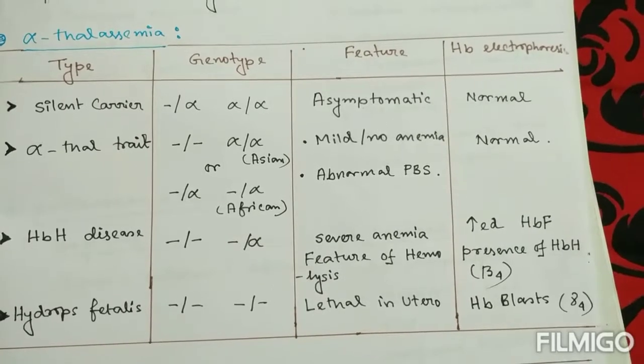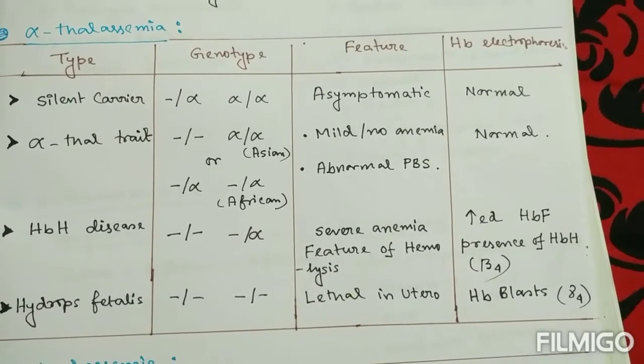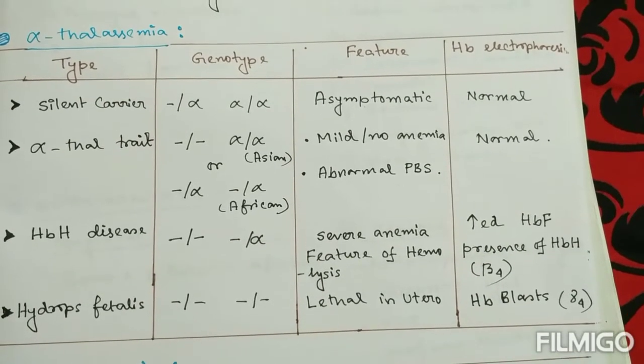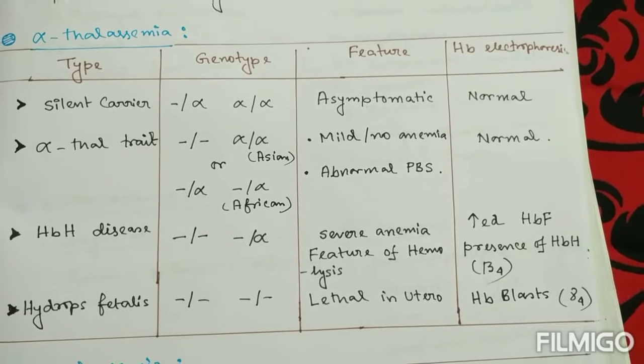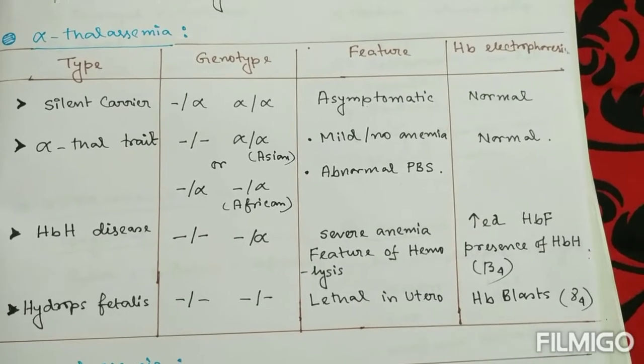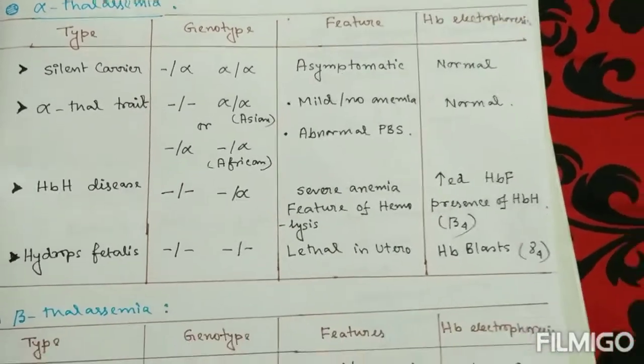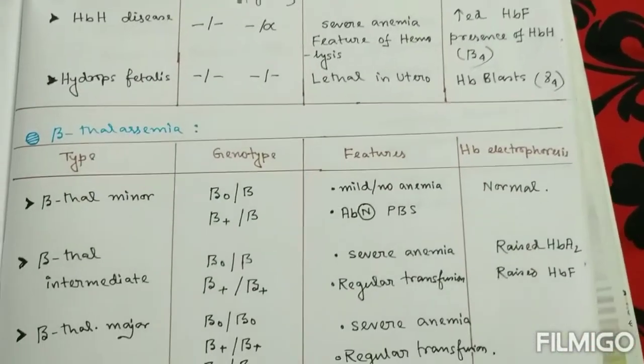In hydrops fetalis, all four alleles are deleted or absent, and it is lethal in utero. In hemoglobin electrophoresis, hemoglobin Barts (gamma-4 tetramers) is abundantly present.